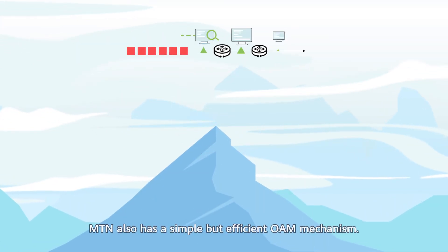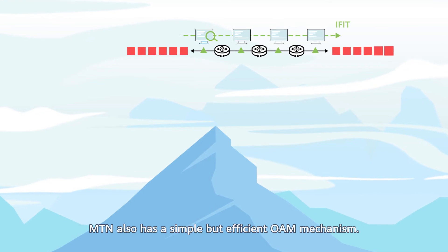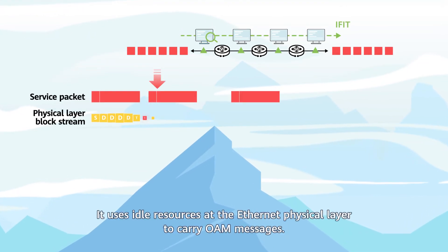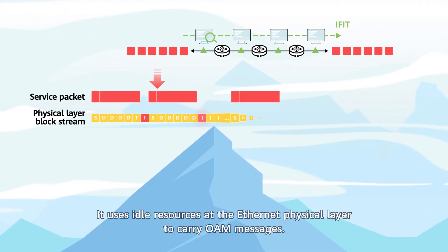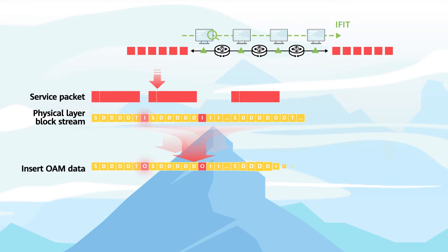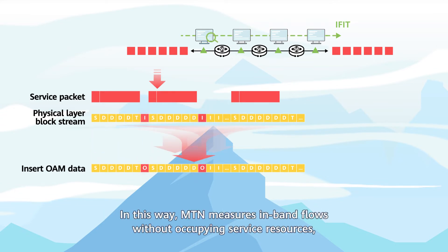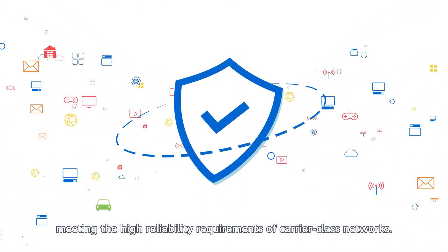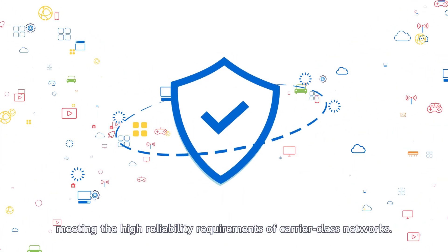MTN also has a simple but efficient OAM mechanism. It uses idle resources at the Ethernet physical layer to carry OAM messages. In this way, MTN measures in-band flows without occupying service resources, meeting the high reliability requirements of carrier-class networks.